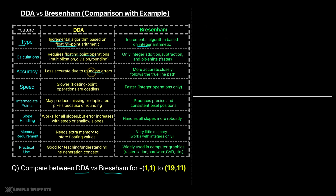When it comes to accuracy, DDA is less accurate due to rounding errors — that is what we are going to actually demonstrate. Since Bresenham has no floating point calculations, it is more accurate and closely follows the true line path. When it comes to speed, DDA is slower because of floating point operations which are costlier, and Bresenham is faster.